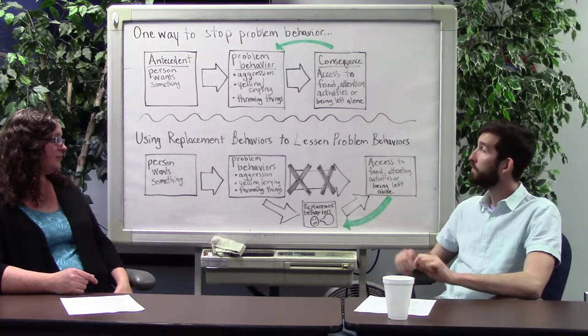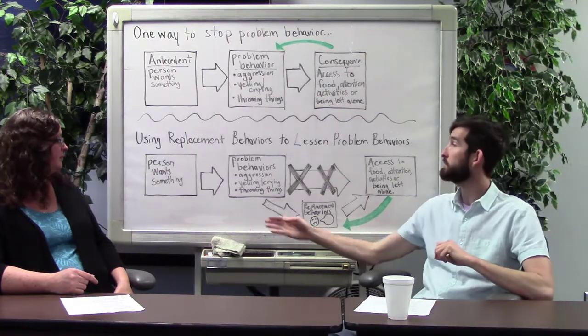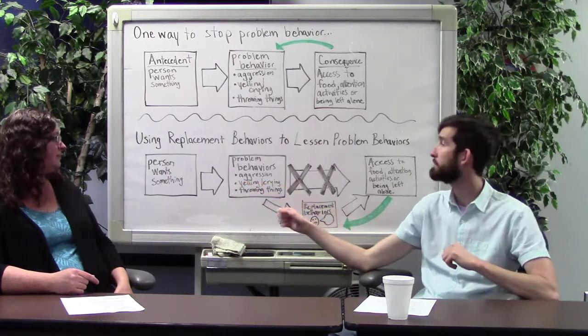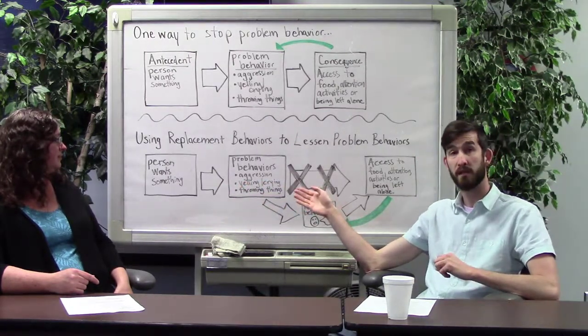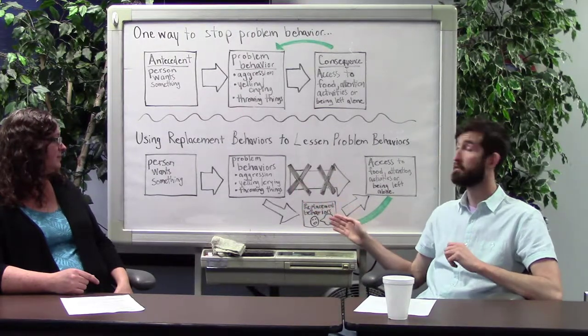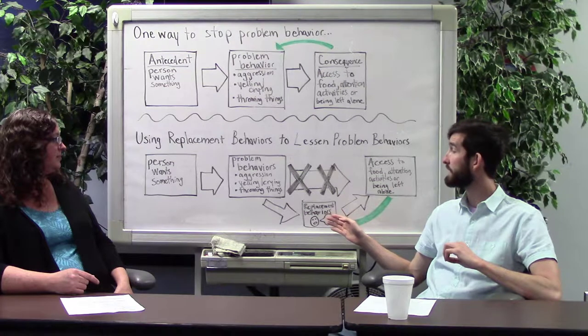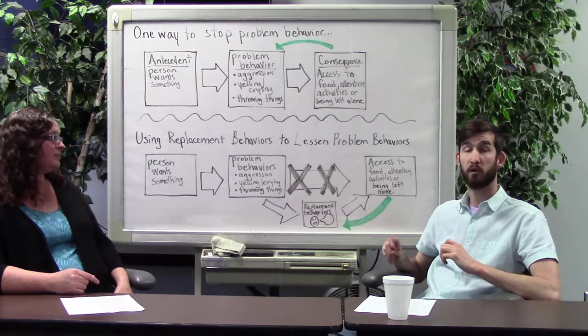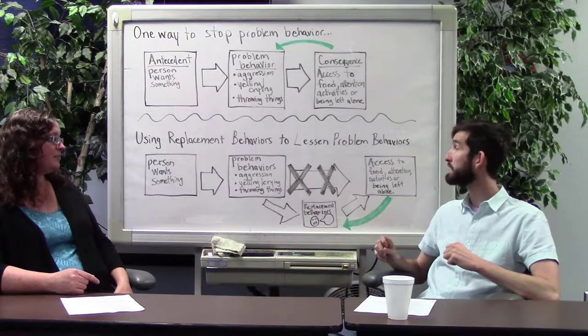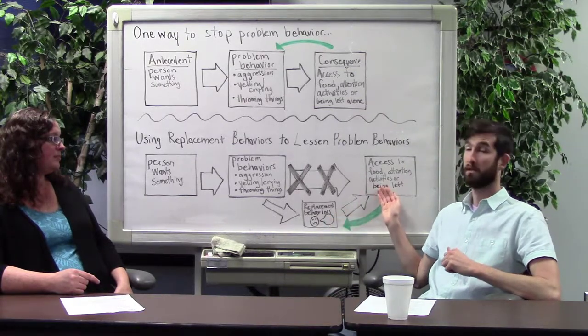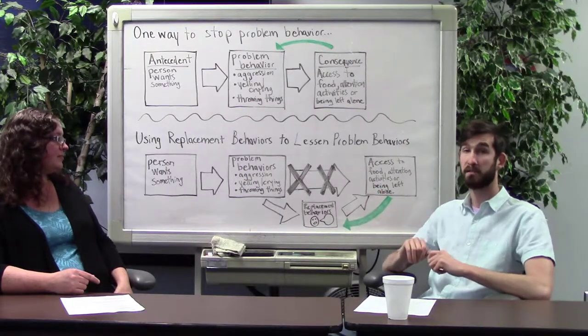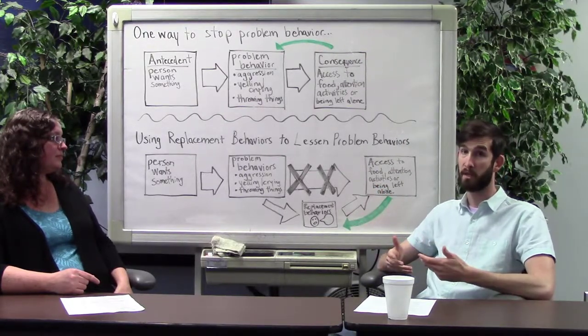So that first example, what happened was he was sitting outside happily and you come up to him and say it's time to come inside, that's the antecedent. The problem behavior is he starts screaming, cussing, and hitting at you. So the replacement behavior that we can teach him is say, Mike, if you don't want to come inside, just tell me I want to stay outside. He communicates that and the consequence is he gets to stay outside, yet he learns that I get to stay outside by the appropriate behavior.